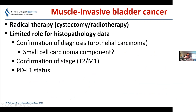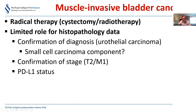For muscle invasive bladder cancer, treatment is radical therapy - cystectomy or radiotherapy - and there is a very limited role for histopathology data. The pathologist's role is to confirm the diagnosis of urothelial carcinoma rather than, say, malignant paraganglioma or lymphoma; to identify any small cell carcinoma component, since that changes chemotherapy; to confirm the T2 stage; to provide N and M stage if biopsies are available; and increasingly, PDL1 status - though still limited.